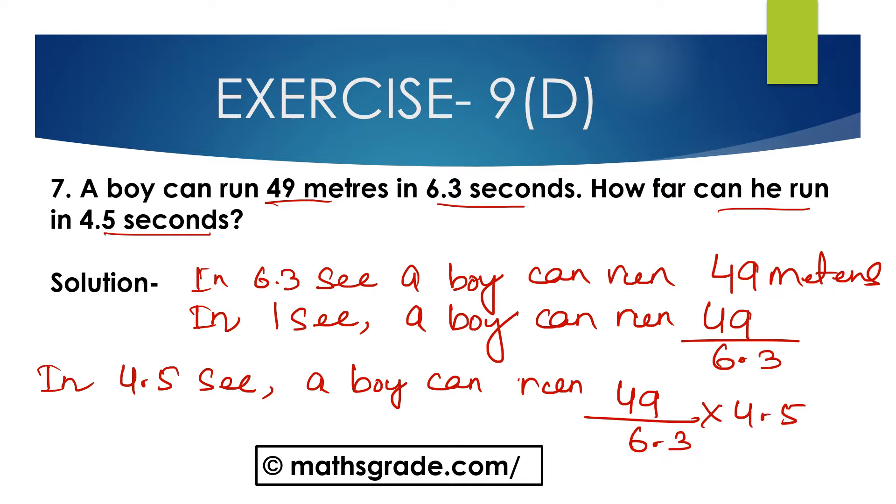Now cancelling 6.3 and 4.5 with 9. 9, 7, just 6.9, 7, just 63. So it is 0, just 7 and 9, 5, just 45. So 0.7 and 0.5.